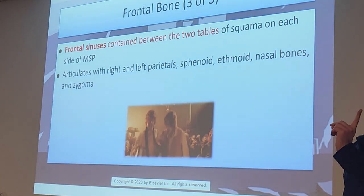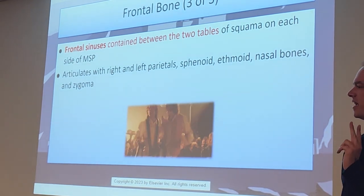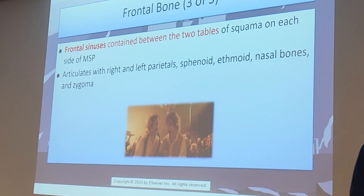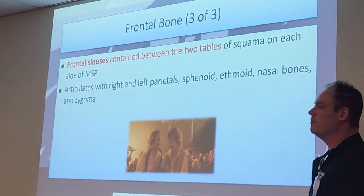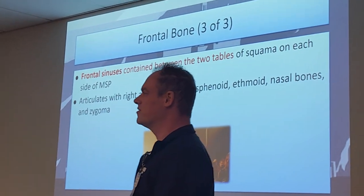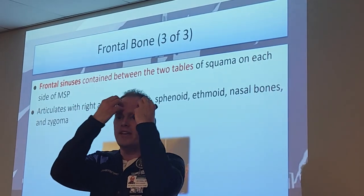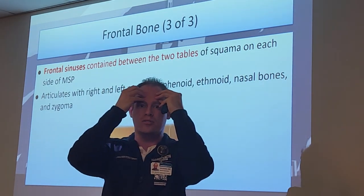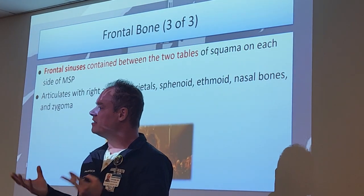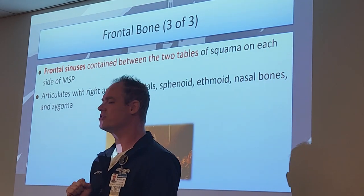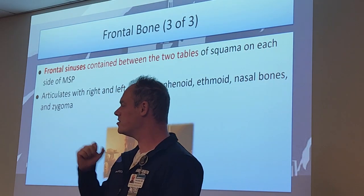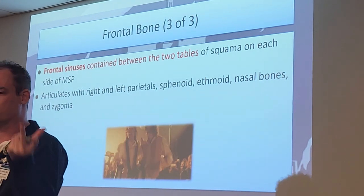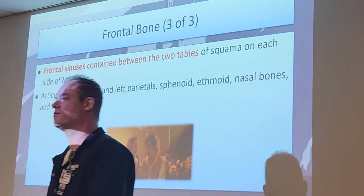Anytime you see the word sinuses, put a star on it - because if there's anything the registry is guaranteed to ask 100% of the time, it's always going to go back to sinus cavities. The frontal bone contains the frontal sinuses, found between the two tables of squama on each side of the MSP. There are two cavities side by side, and every person has a different number of frontal sinuses - some might have two, three, four, five, or six. It's just random genetics.